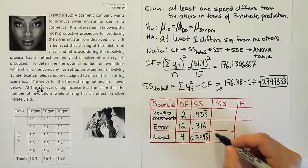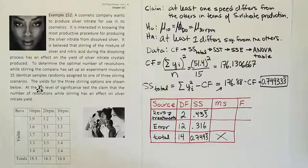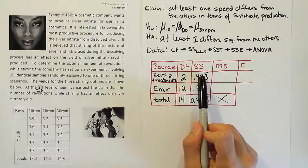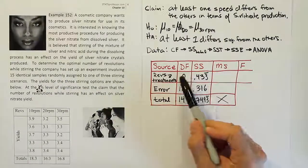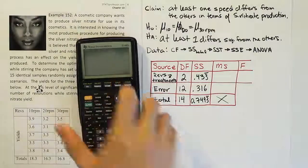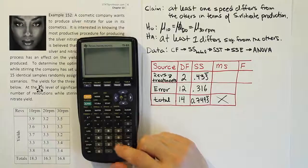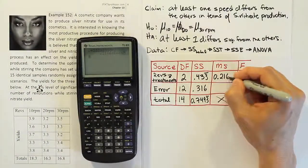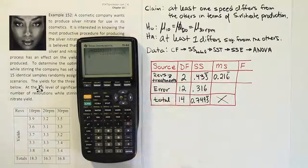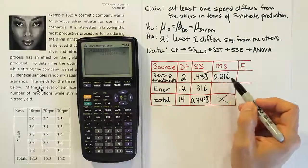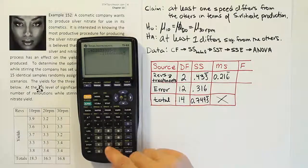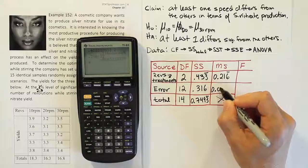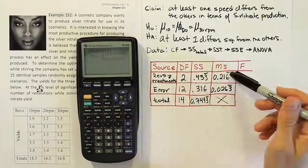Now we have to do the mean squares — and don't forget, we leave out the mean square box for total. We divide straight across: this degrees of freedom into the sum of squares. For treatments: 0.433333 divided by 2 gives us 0.216 repeating. For error: 0.316 divided by 12 gives us 0.0263 repeating. So we now have our mean square for treatments and our mean square for error.